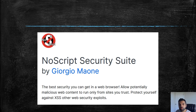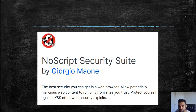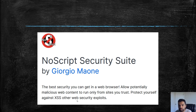NoScript, if you've heard of it, is a client-side filtering tool developed in 2006 by Giorgio Menon. It provides the best security you can get in a web browser — it allows potentially malicious web content to run only from sites you trust, protecting against XSS and other web security exploits. It's a whitelist-based or allow-list-based security tool, blocking malicious JavaScript, Java, and Flash. It's also embedded in Tor, which is part of why Tor is so secure and private.